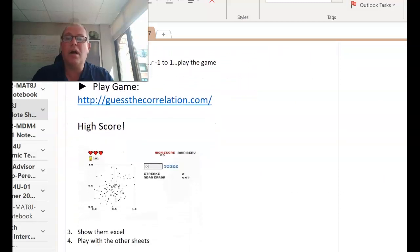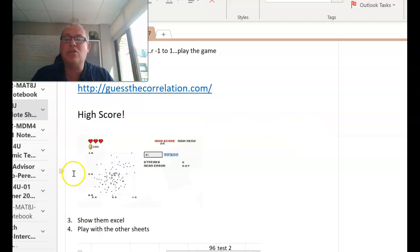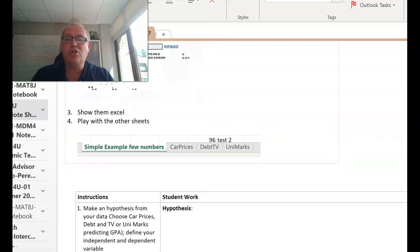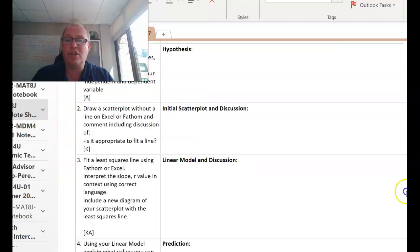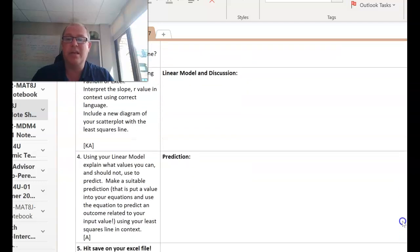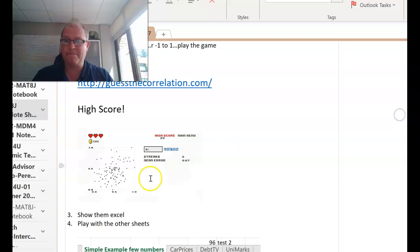You can see my high score was 101 so you can see if you can beat me. Then you can also choose either car prices, debt and TV, or university marks and fill out this chart and try your hypothesis. Just follow the instructions there. Thanks very much everyone, thanks for watching, I hope you enjoy the rest of this class.